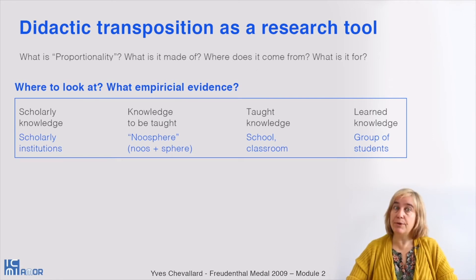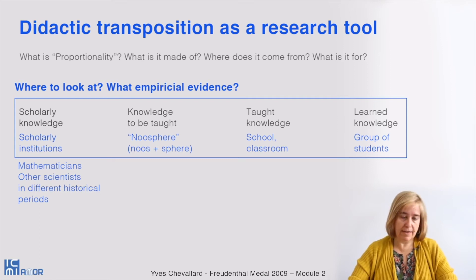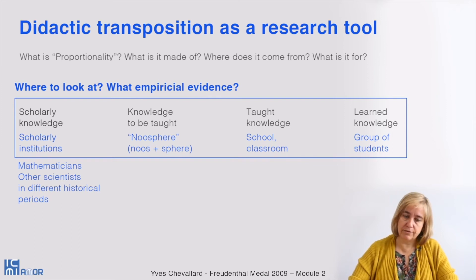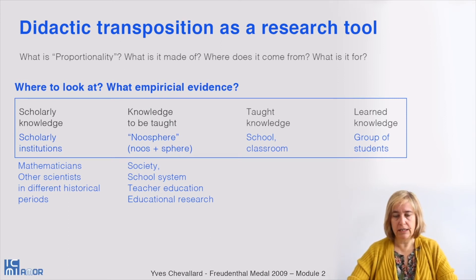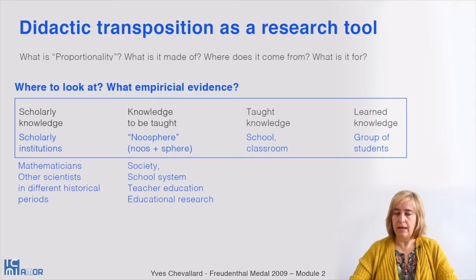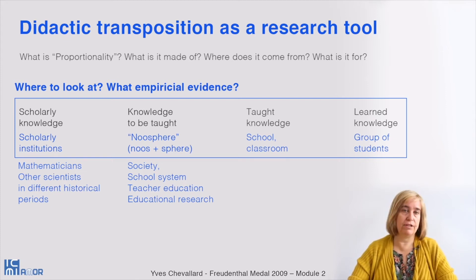To answer these questions, we have to consider all the institutions that take place in the different steps of the didactic transposition process. In the case of proportionality, for scholarly knowledge we will look at mathematicians and other scientists across different historical periods. For the nosphere, we will look at society, the school system and school decision makers, teacher education, and educational research in different historical periods. Here are some pieces of empirical information gathered to give you the flavor of the type of institution searched and the kind of empirical data that can be found.